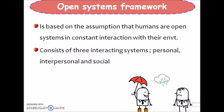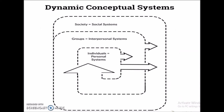The open system consists of three interacting systems: personal, interpersonal and social systems. This is the conceptual model of King's Goal Attainment Theory. Here she describes the person's open system consisting of personal system, interpersonal system and social systems.